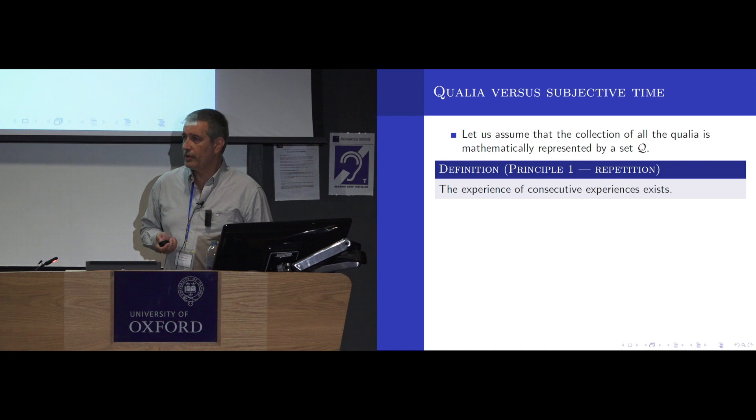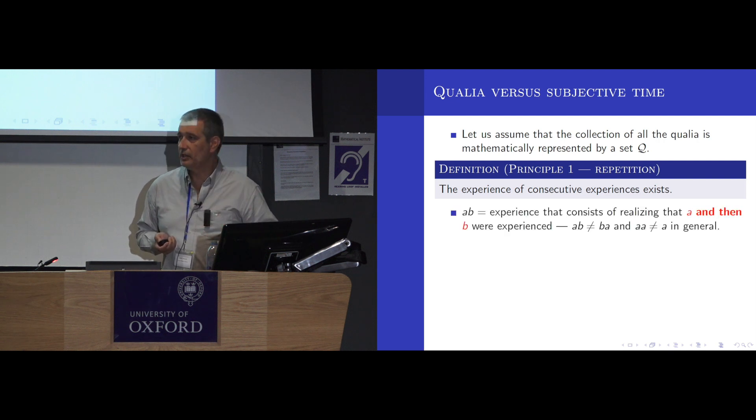The first bit of structure that I'll put here is concerned with this so-called principle one, which states that the experience of consecutive experiences exists. If I see a flash of light twice, suddenly I realize, oh, well, there were two of these. That's a qualia itself. So I'll take that this set has a multiplication that has A times B being the experience of A followed by B, realized as a singular qualia.